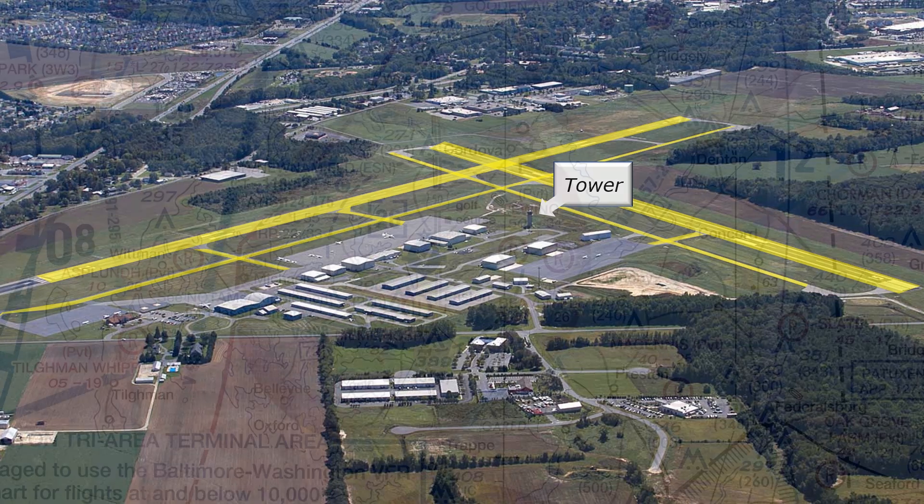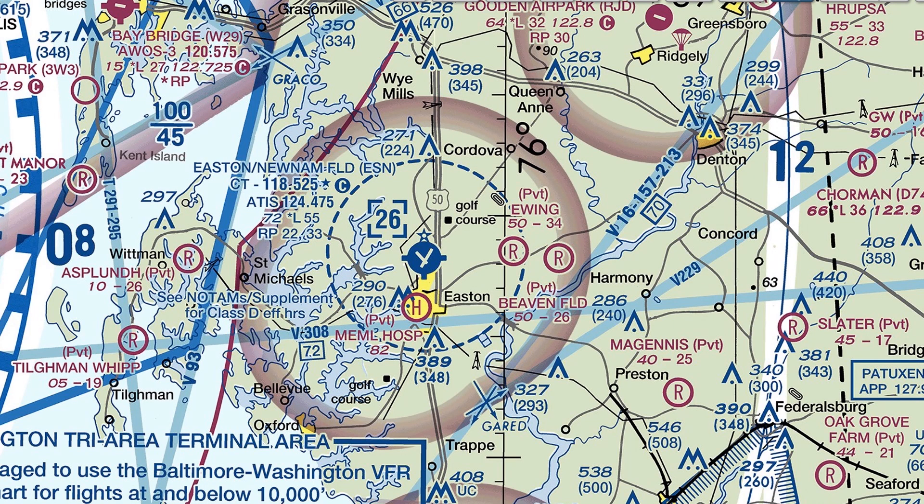For this reason, the most basic type of towered airport — Class D, like Easton — only requires aircraft to be in two-way radio communication. There's no need for aircraft to be identified via radar, so equipment like a transponder is not a requirement.